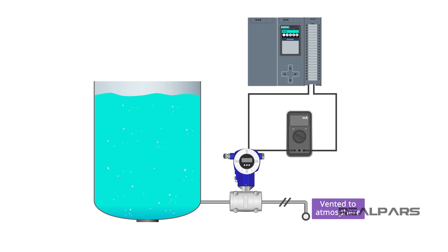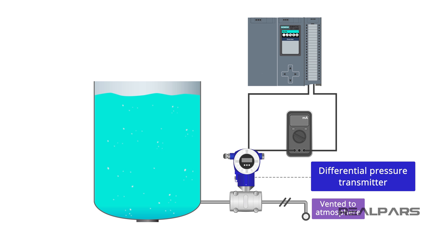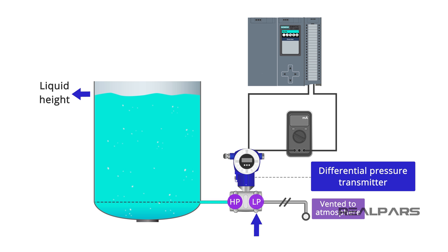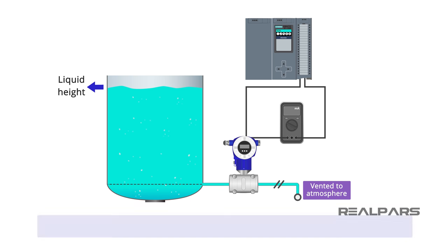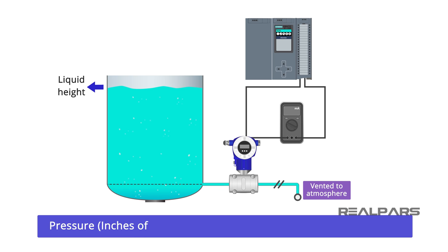As a refresher, let's look at how we ended the first part of this video series. We looked at a control loop where a differential pressure transmitter is connected to measure an open vessel level. The high pressure port is connected at the 0 inches point, and the low pressure port is vented to atmosphere. Pressure in inches of water is equal to the relative density of the liquid multiplied by the height of the surface of the liquid in inches.